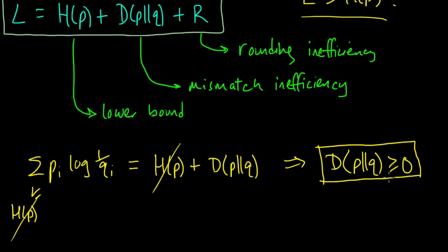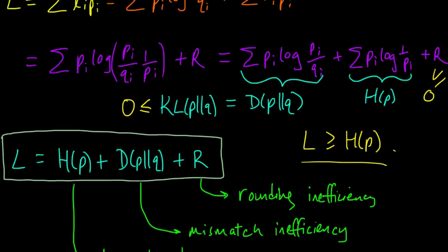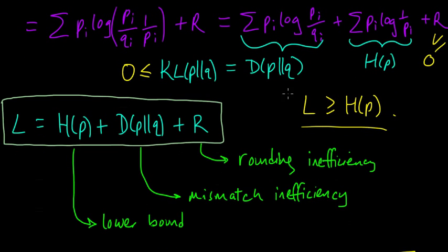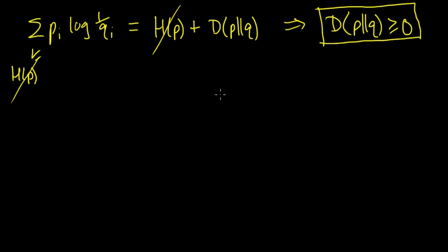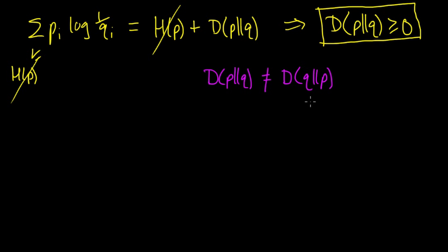Later we'll explore relative entropy in more detail, but a brief comment now: sometimes people call this the KL distance, but this is not a distance metric in the analytic sense of the word. The reason is because it's not symmetric — the relative entropy between P and Q is not necessarily equal to the relative entropy between Q and P. So in general, D(P || Q) does not equal D(Q || P).